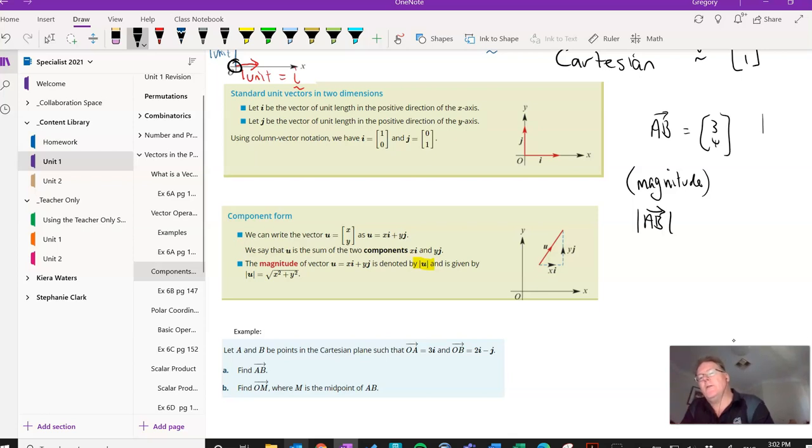And so if we remember that AB was vector three, four. So if we think about that vector, three units across and four units up. So very simply a quick Pythagoras, square root of three squared plus four squared. And I can find that very easily it's five. So it has a length of five units.